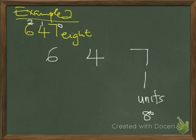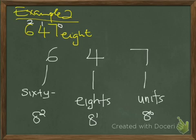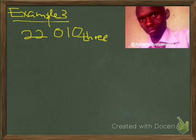Here is 8 to the power 1 — these are 8s. Here is 8 to the power 2; 8 times 8 is 64, so these are 64s. It means we have 6 sixty-fours, 4 eights, and 7 units.